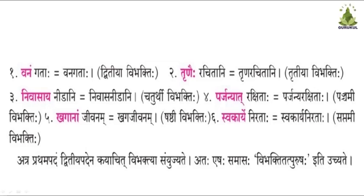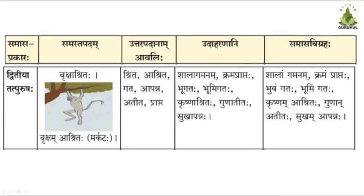Dvitiya Tatpurush Samasah: when Shrita, Ashrita, Gata, Aapanna, Atita, or Prapta are the Uttarapad, then the compound is Dvitiya Tatpurush Samasah. In the Vigraha of Dvitiya Tatpurush Samasah, the Purvapat should be in Dvitiya Vibhakti and the Uttarapad will be in Prathama Vibhakti.